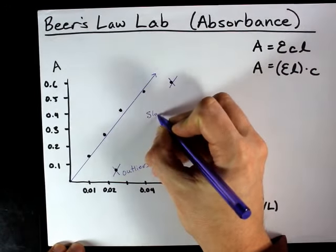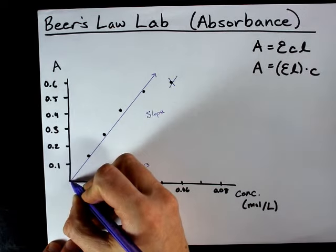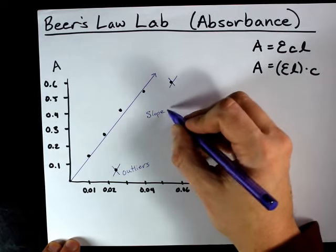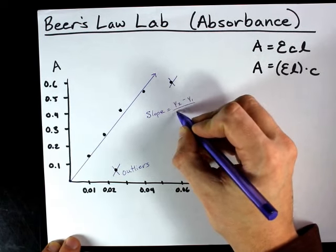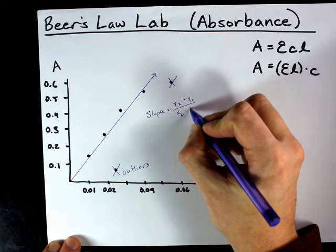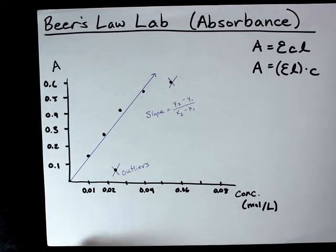And what you want to do is calculate the slope of that line. Now, if you made it go through zero, zero, zero, it'll be easy. If you didn't, that's okay. You just need two points, and you can use slope equals y2 minus y1 over x2 minus x1.